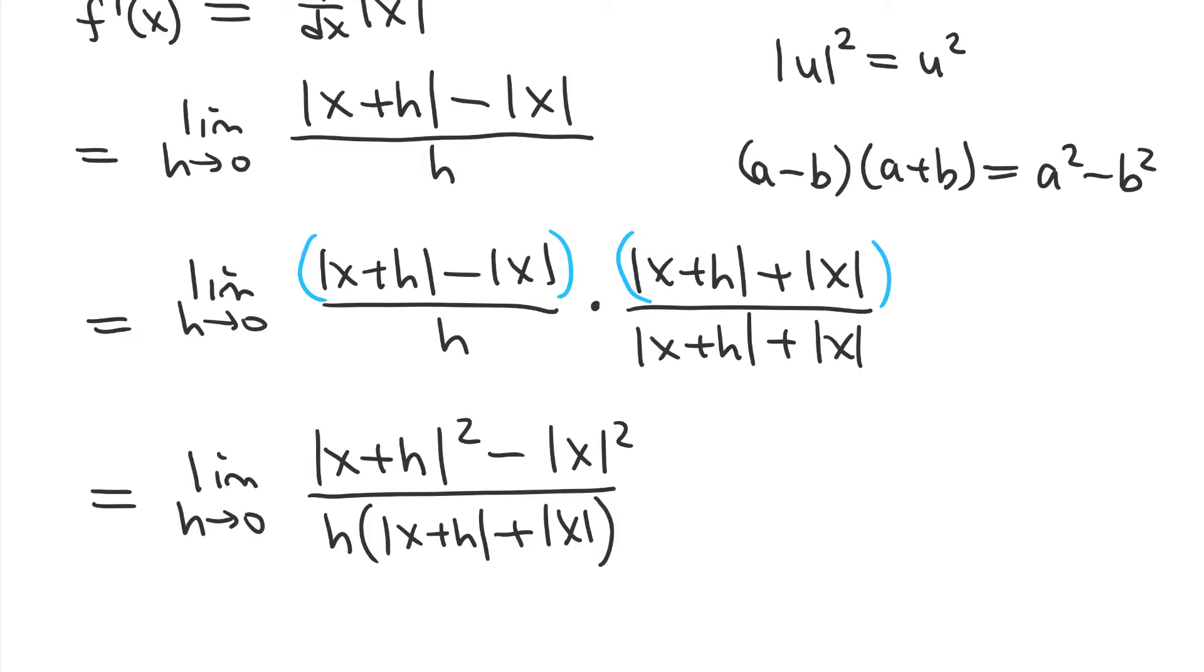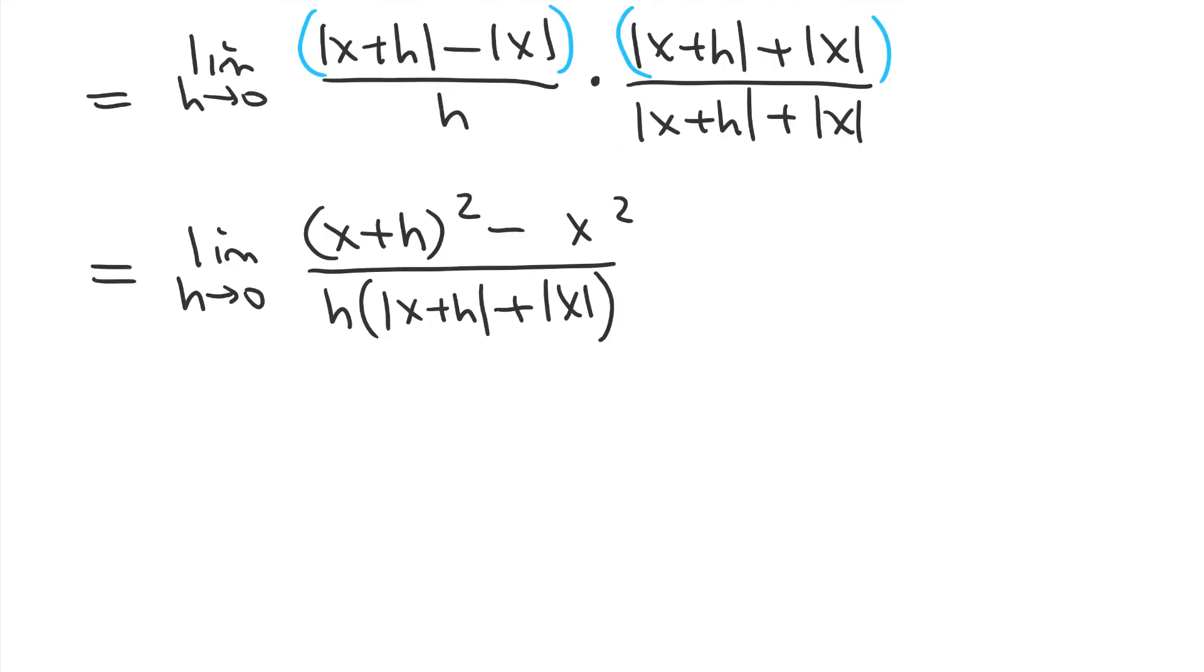And from here, like I said, we can clear the absolute value sign. So, I'll just clear them here. Notice that the denominator will be fine. We could plug in h equals 0 into the denominator, if not for this h here. And so, our goal next is going to be to cancel an h from the numerator and denominator, in order to clear that.